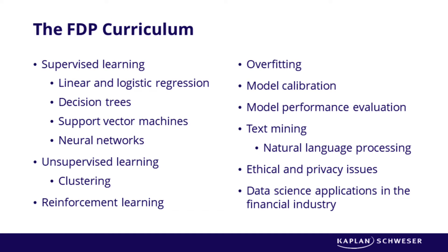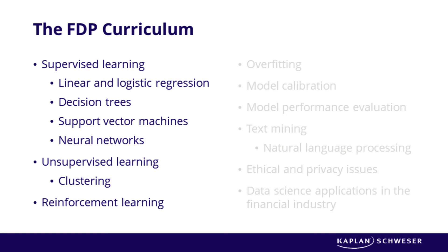The FDP curriculum is structured around learning objectives and keywords from select readings on data science and machine learning. Many of the central concepts can be seen on this slide. This includes types of machine learning models, which are categorized into supervised, unsupervised, and reinforcement learning approaches. Supervised learning involves regression and classification trees, as well as neural networks, and unsupervised learning involves data clustering techniques.